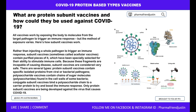Because these fragments are incapable of causing disease, subunit vaccines are considered very safe. There are several types: protein subunit vaccines contain specific isolated proteins from the viral or bacterial pathogen; polysaccharide vaccines contain chains of sugar molecules found in the cell wall of some bacteria; conjugate subunit vaccines bind a polysaccharide chain to a carrier protein to try and boost the immune response.